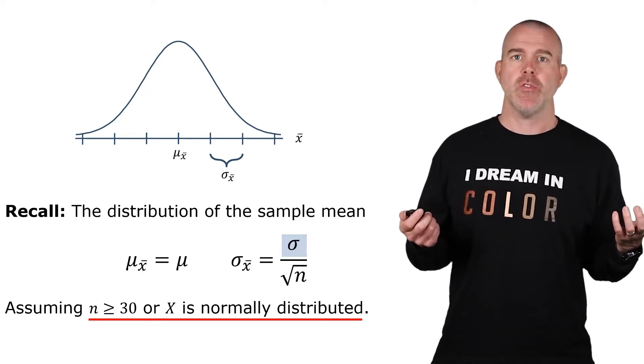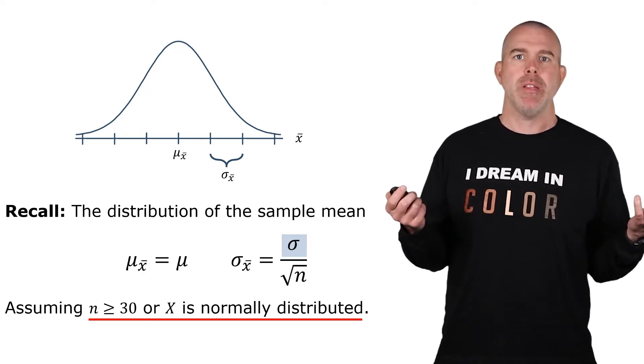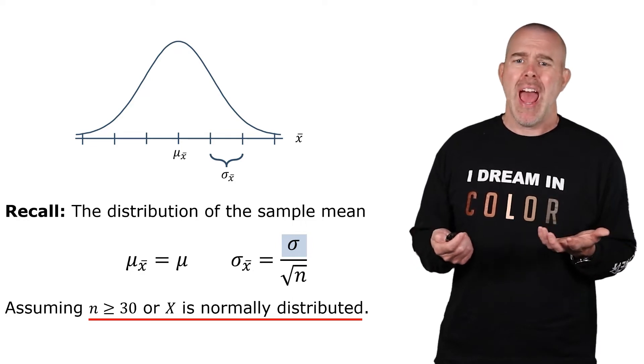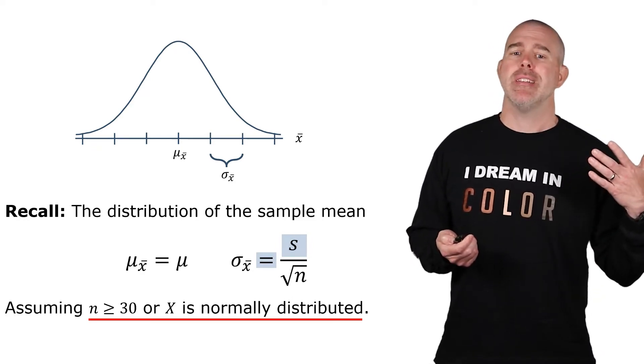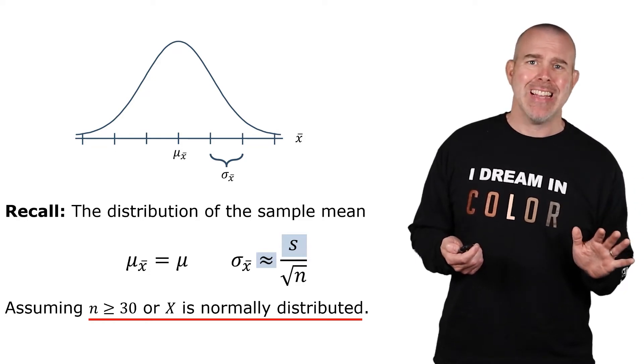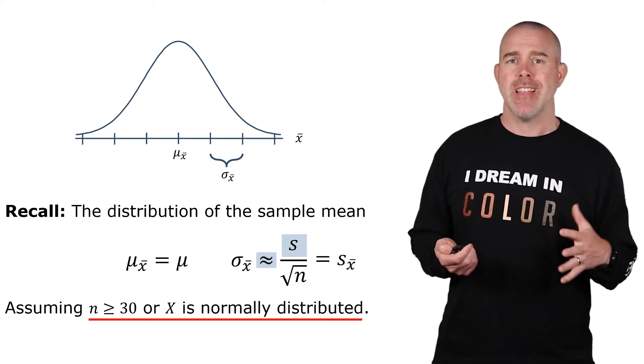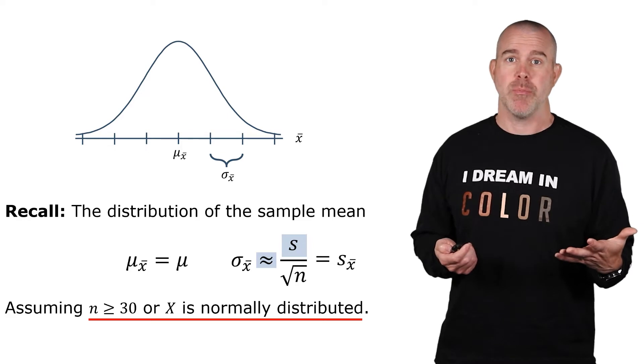I don't know what the standard deviation is for number of siblings for the whole population either. So we're going to have to substitute our sample standard deviation. The problem is then that's not exactly the standard deviation of X bar. It's actually the sample standard deviation of X bar.